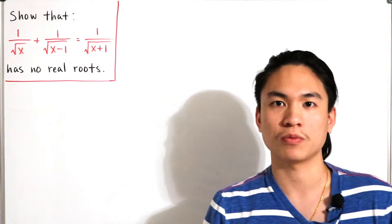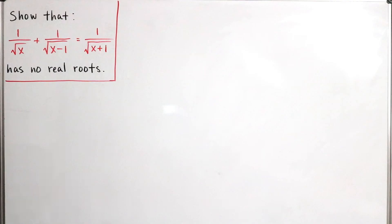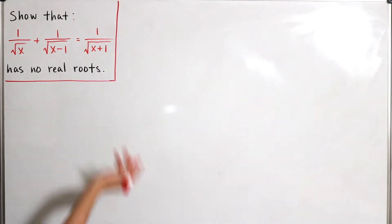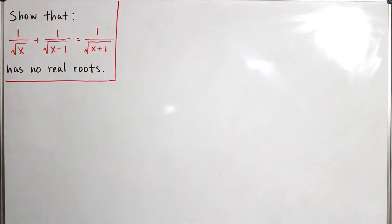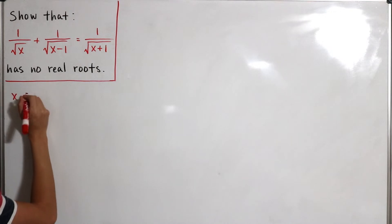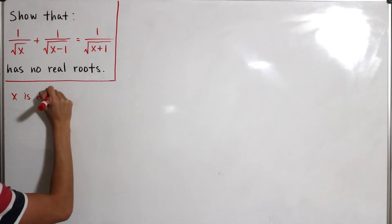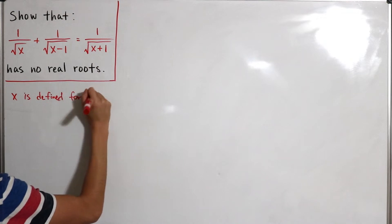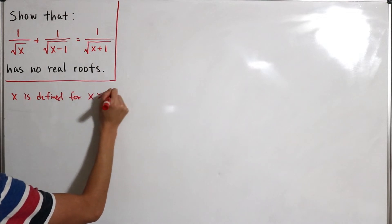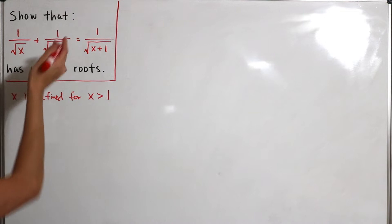Let's jump in. Clearly, since we're dealing with square roots, we're working with positive numbers. So x is defined such that x is strictly greater than 1.